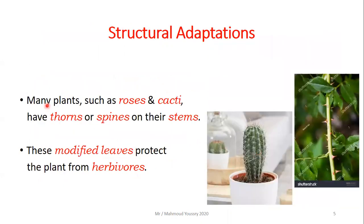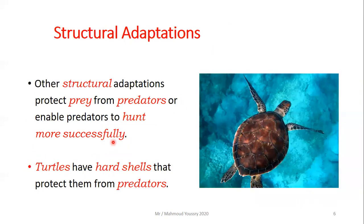Also many plants, such as roses and the cacti, have thorns or spines on their stems. These are the spines of the cactus and the thorns or spines of roses. These modified leaves protect the plant from herbivores.